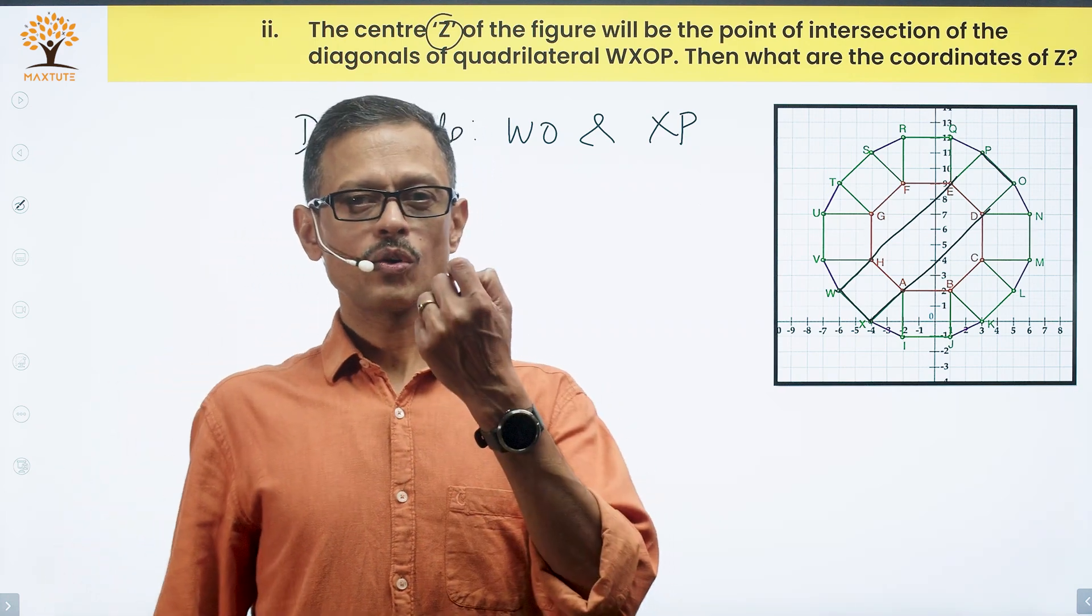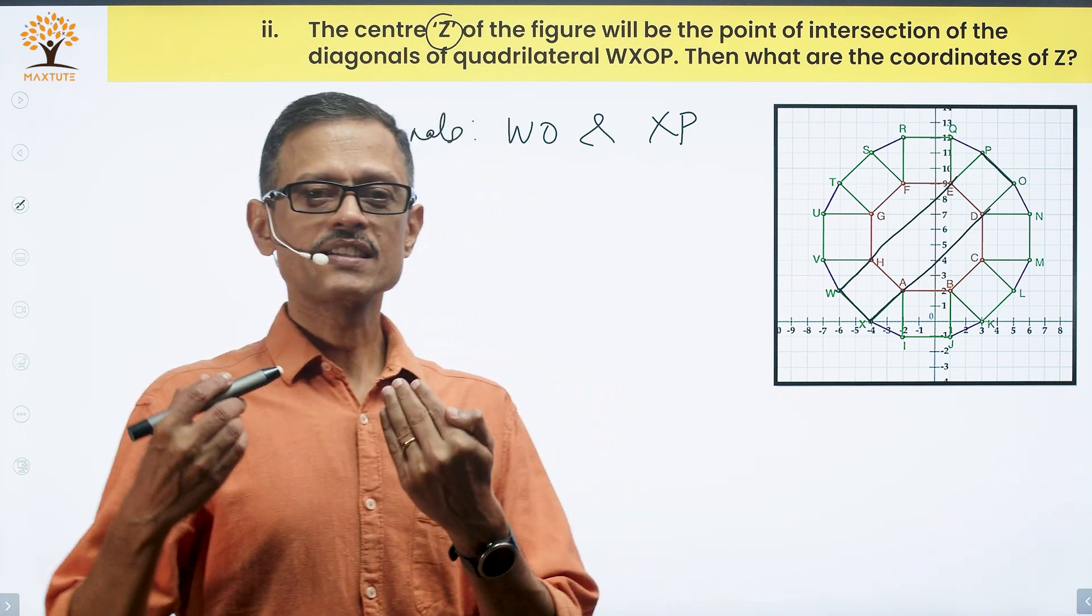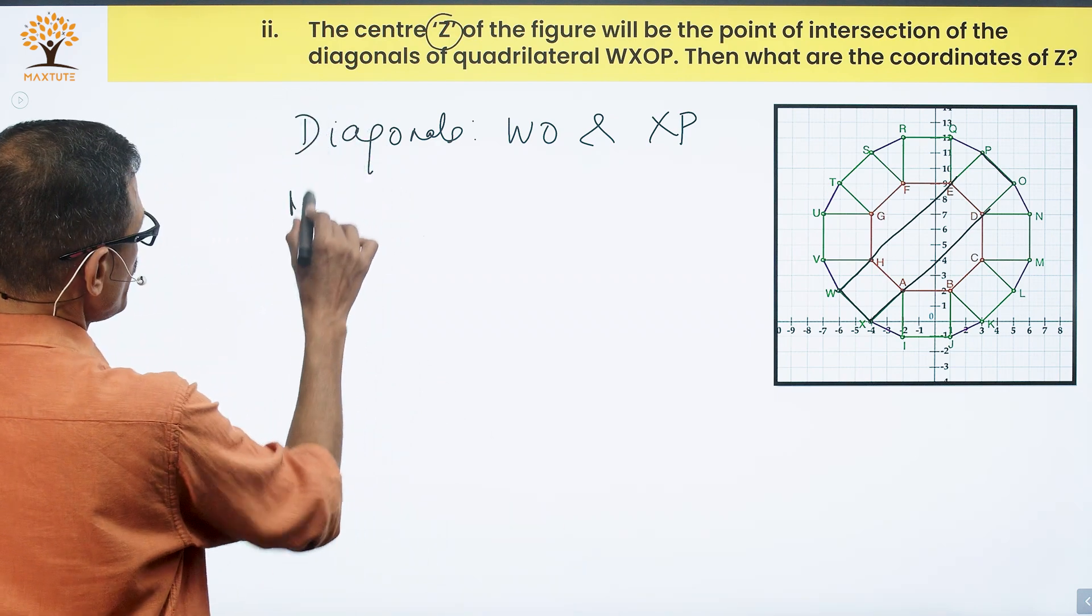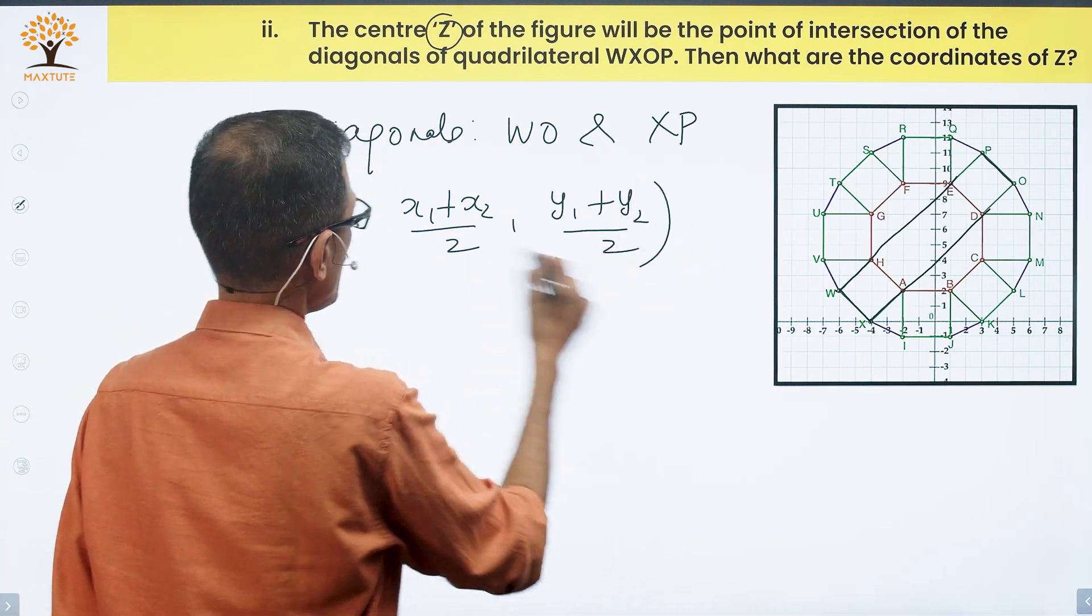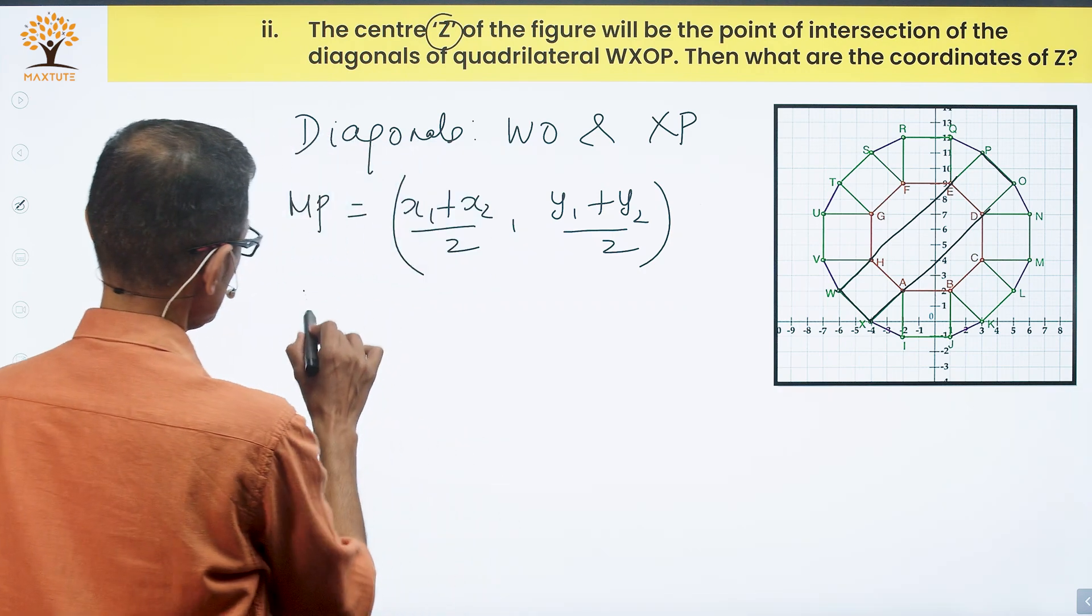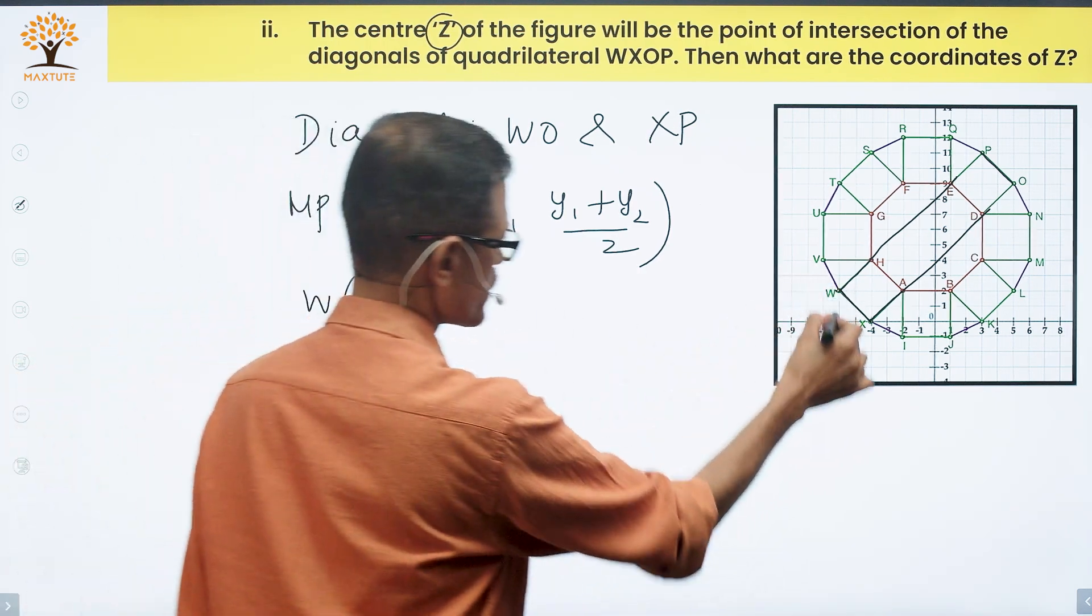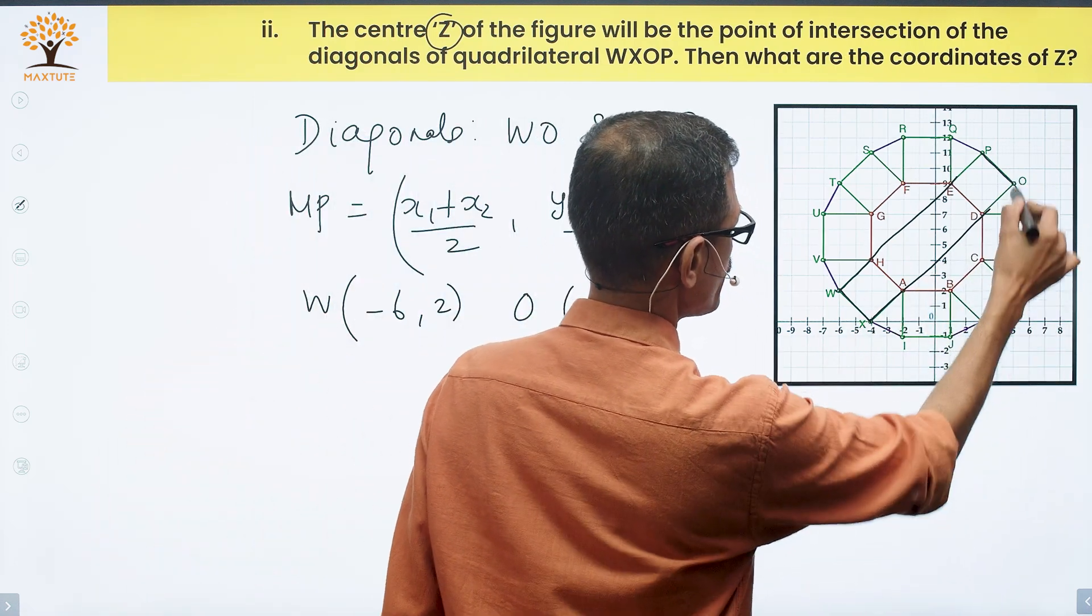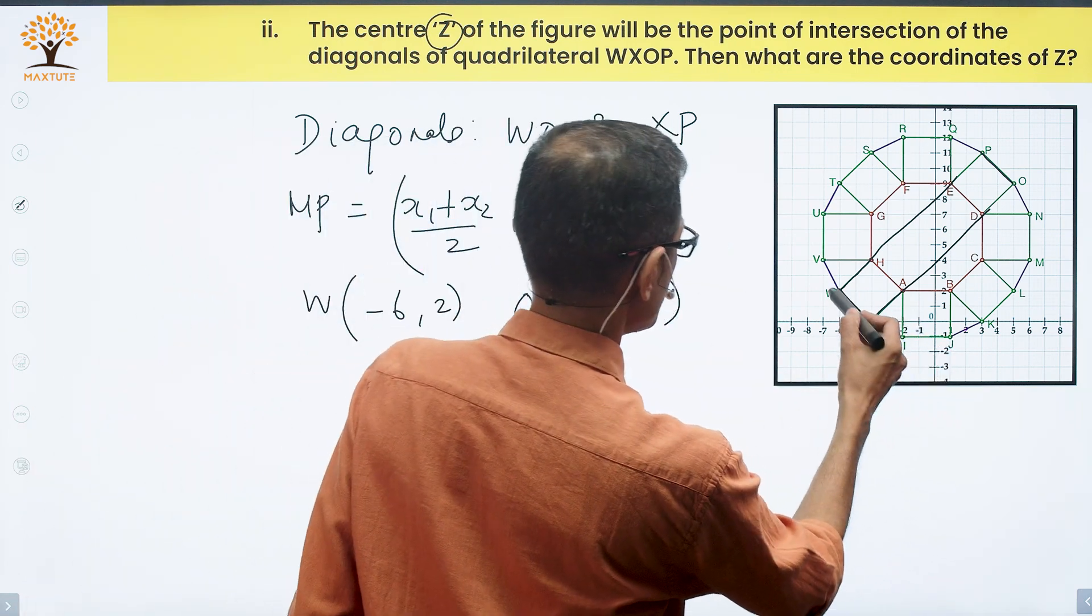In a rectangle, diagonals bisect each other. They are saying that Z, the center of this figure, is at the point of intersection of the diagonals. One diagonal is WO and the other is XP. Diagonals bisect each other, so the coordinates of point Z is the intersection point where these diagonals get bisected, which means its Z coordinate is the midpoint of WO or the midpoint of XP, both giving the same value.